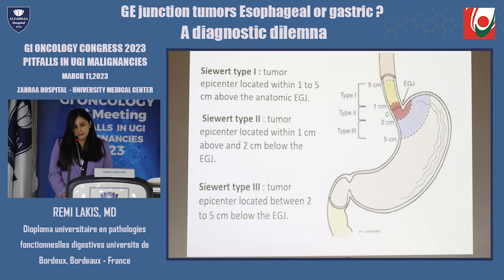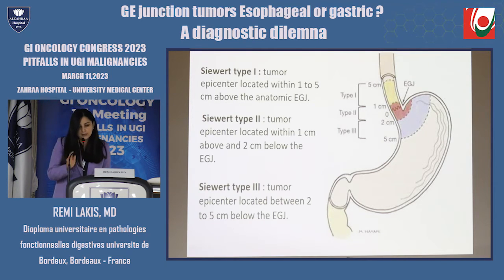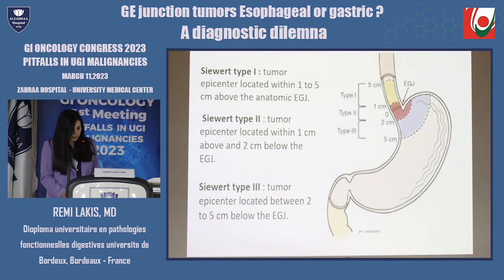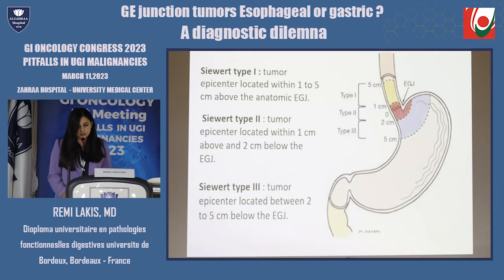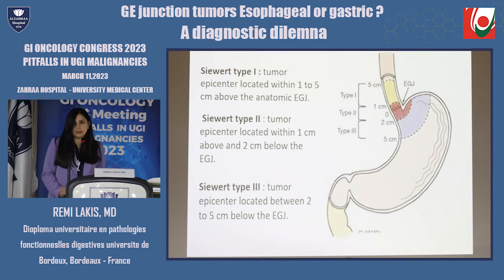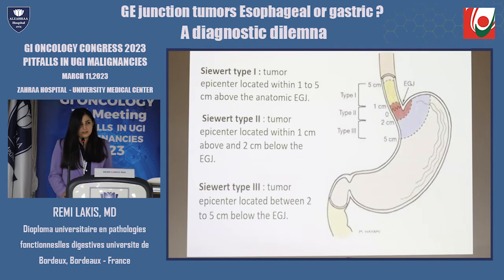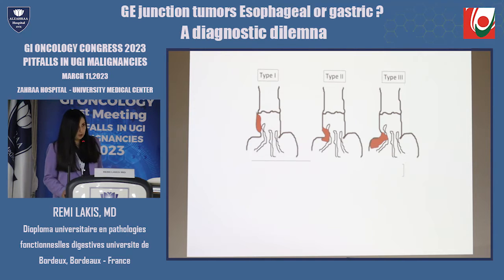The most famous classification is a surgical classification that goes back to the late 70s. It is the Siewert classification, which divides the G-junction tumors into three types: type 1 for tumors located between 5 and 1 centimeter above the G-junction; type 2 for tumors between 1 centimeter above and 2 centimeters below the G-junction; and type 3 for tumors between 2 and 5 centimeters below the G-junction.